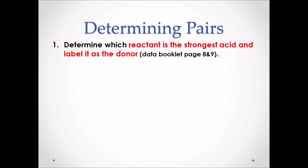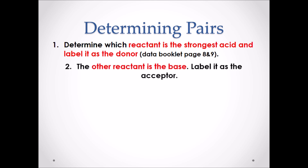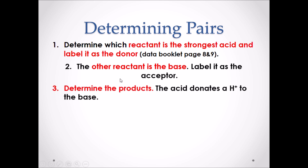Here is how to determine conjugate acid and base pairs in a chemical reaction. Step one: determine which reactant is the strongest acid and label it as the donor. To do this, use the table of acids and bases on pages eight and nine of the Chemistry 30 data booklet. Step two: once you have determined which reactant is the strongest acid, the other reactant is then the base. Step three: determine the products — remember, the acid donates a hydrogen to the base.